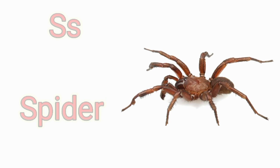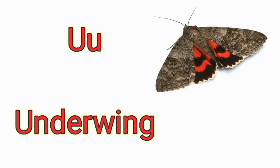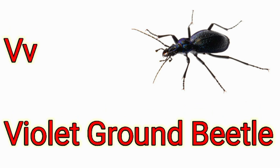S is for Spider. T is for Thrips. U is for Underwing. V is for Violet Ground Beetle. W is for Water Bug.